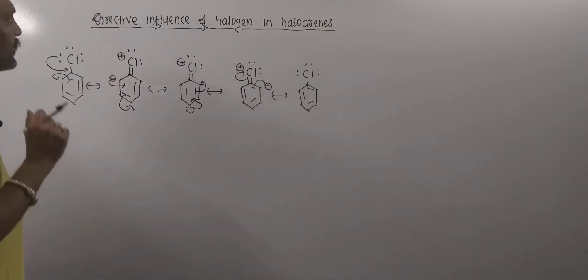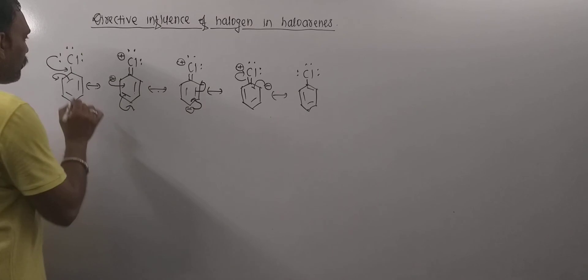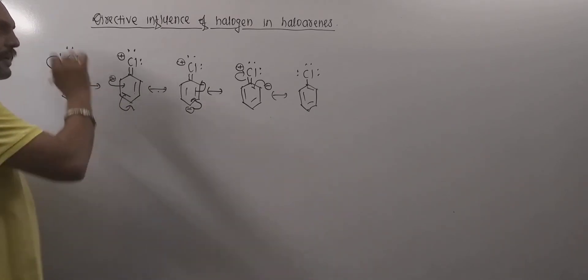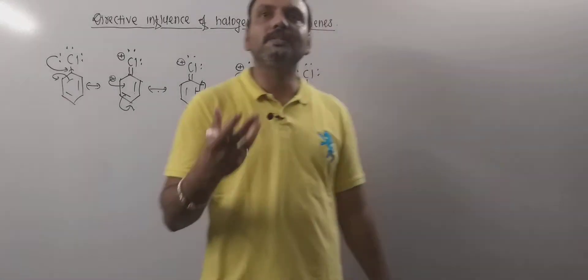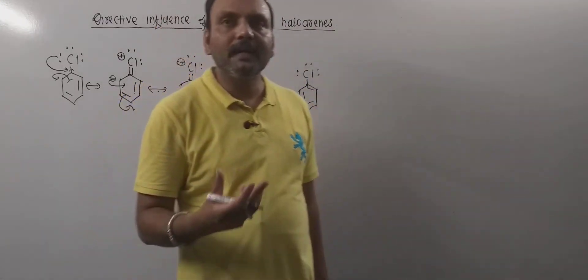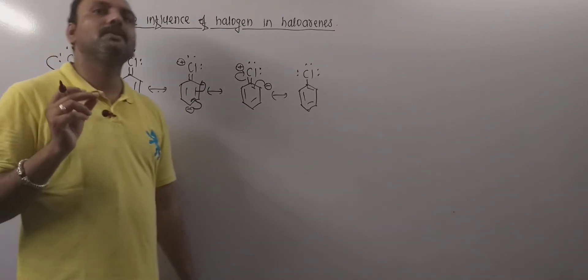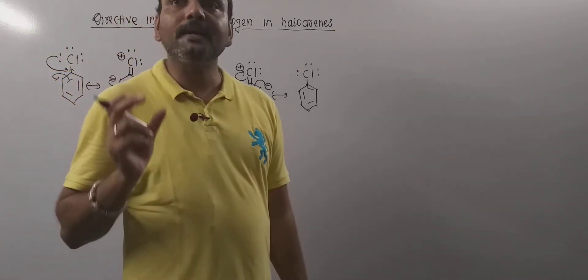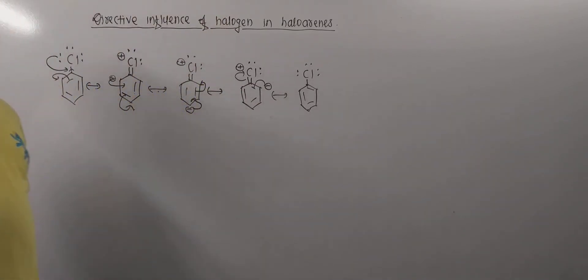But on other hand, point to be remembered that the chlorine is more electronegative than carbon. Therefore, it would attract electron pairs towards itself. I mean minus I effect, negative inductive effect seems to be present right there. But plus M effect is dominant over minus I effect.